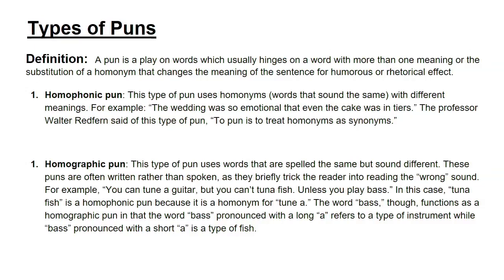A homographic pun uses words spelled the same but sounding different — often written rather than spoken, as they trick the reader into reading the wrong sound. Example: 'You can tune a guitar but you can't tuna fish, unless you play bass' — 'tuna fish' is a homophonic pun on 'tune a,' while 'bass' functions as a homographic pun: bass with a long A is a musical instrument, while bass with a short A is a type of fish. You could be asked to identify whether an example is homophonic or homographic.